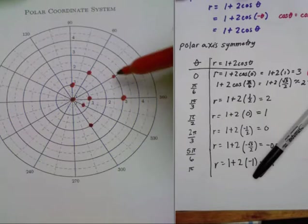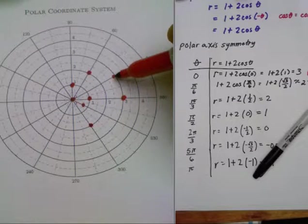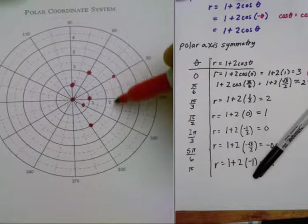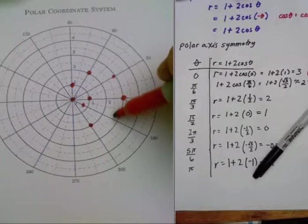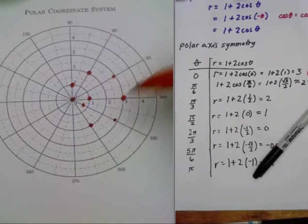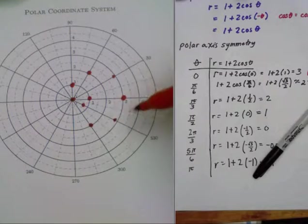And this point here, 2.73, we can go down to 30 degrees, which is going to be right about here. Now when we plot this, I've got enough points.